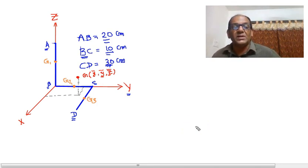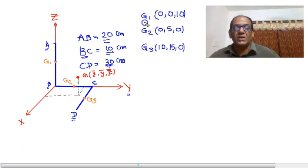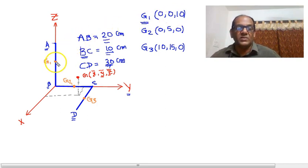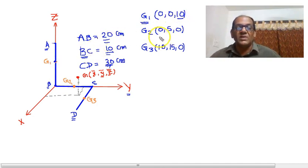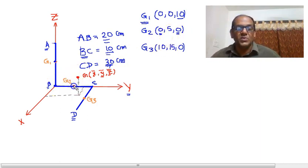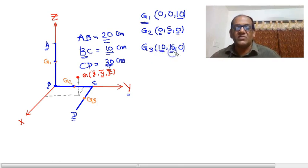G1 has coordinates (0, 0, 10) because it lies on the Z axis with X and Y equal to zero, and at distance 20/2 = 10 along Z. For G2, it is a point on the Y axis, so X and Z coordinates are zero, and we go halfway along BC: distance is 5. For G3, the X coordinate is the distance from C to G3, which is half of CD = 15, and the Y coordinate is the distance from B to C = 10, so G3 is at (15, 10, 0).